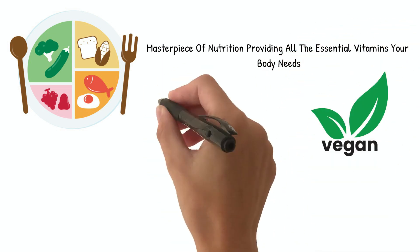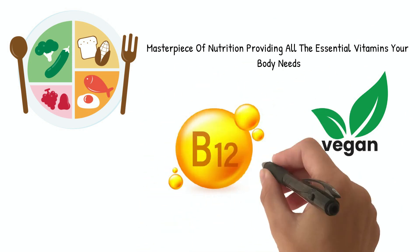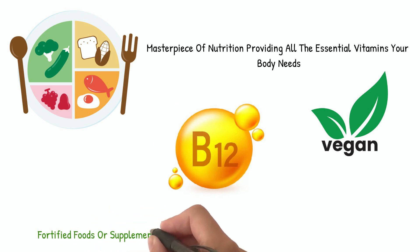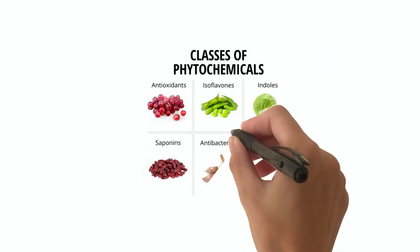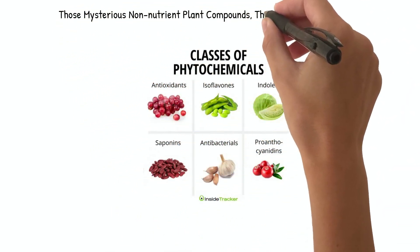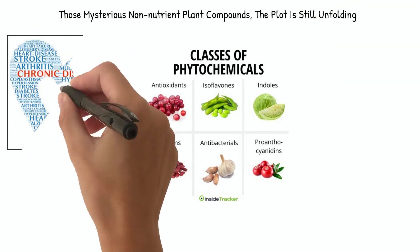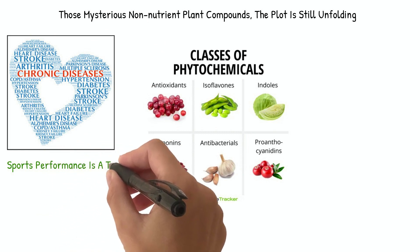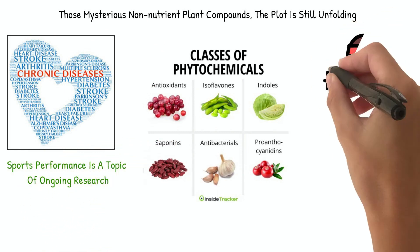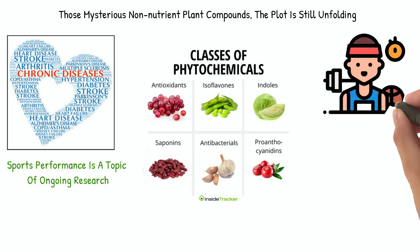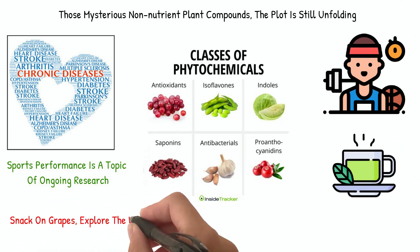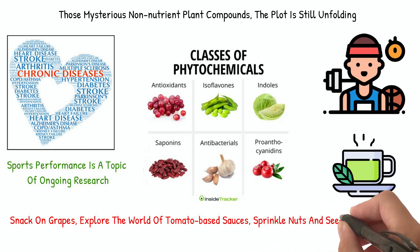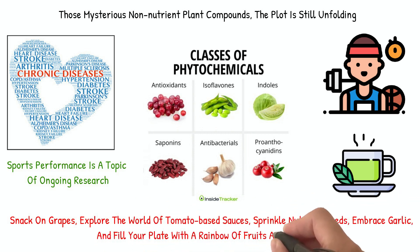For vegans, particularly, the plot thickens with the challenge of sourcing vitamin B12, found naturally in animal products. Here, fortified foods or supplements become necessary co-stars in their dietary tale. As for phytochemicals — those mysterious non-nutrient plant compounds — their role in chronic disease prevention and sports performance is a topic of ongoing research. For athletes looking to boost their phytochemical intake, the advice is simple: sip on green tea, snack on grapes, explore tomato-based sauces, sprinkle nuts and seeds, embrace garlic, and fill your plate with a rainbow of fruits and vegetables.